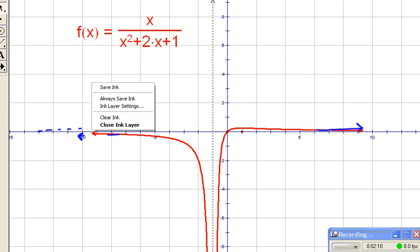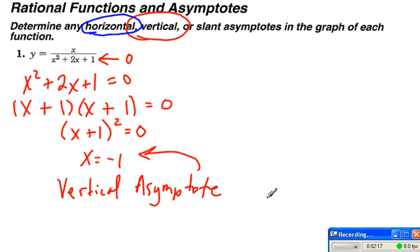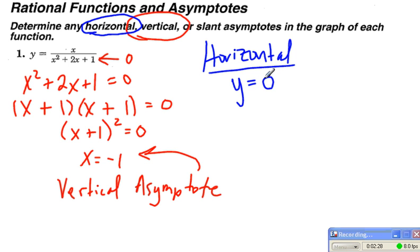So the horizontal asymptote then, since it is at the x-axis, is going to be located at the line y equals 0.